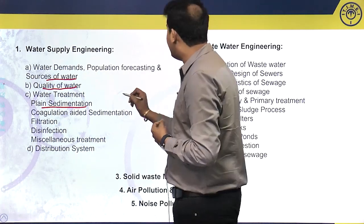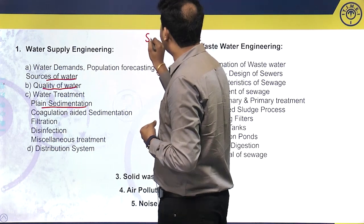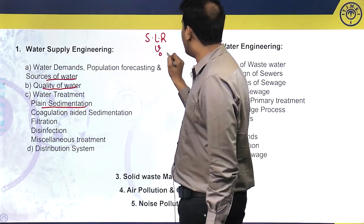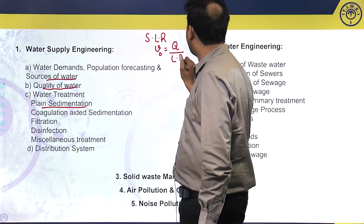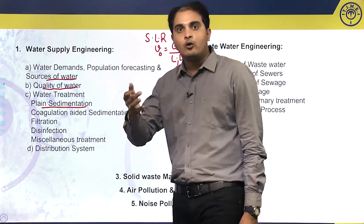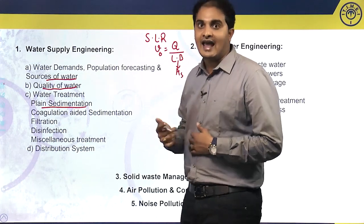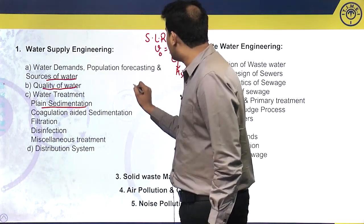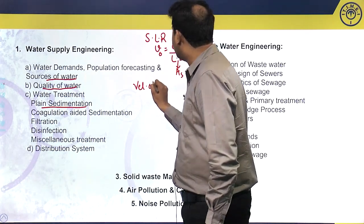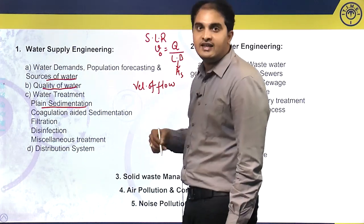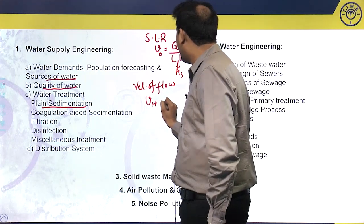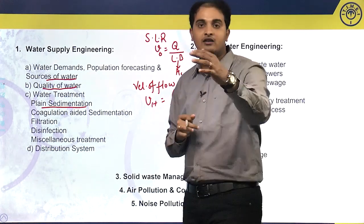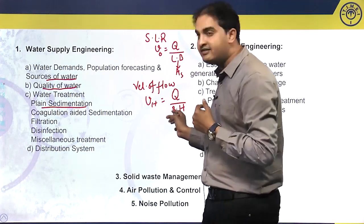The first design parameter is surface loading rate (SLR), denoted by V₀, given by the formula V₀ = Q / (L × B), where L × B is the surface area. Since water is loaded along the depth of the sedimentation tank, the surface area is considered. The next design parameter is flow-through velocity, denoted VH, given by VH = Q / (B × H), where B × H is the cross-sectional area, since water flows along the length of the tank.